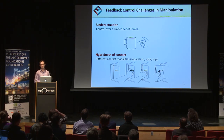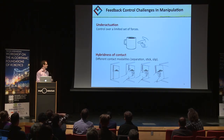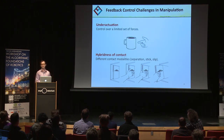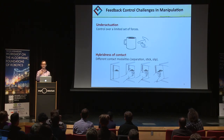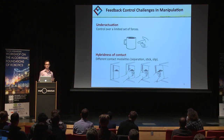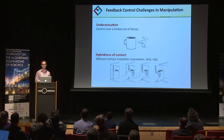The second great challenge is the hybridness of contact. Contact has different modes. For example, take the example of grasping a book from a shelf. Your hand is initially separated from the book, but then to retrieve the book it will make contact, pull the book back in a sticking phase, and then quickly slide relative to the book to secure a grasp. These transitions between separation, sticking, and sliding result in non-smooth dynamics that complicate feedback controller design.